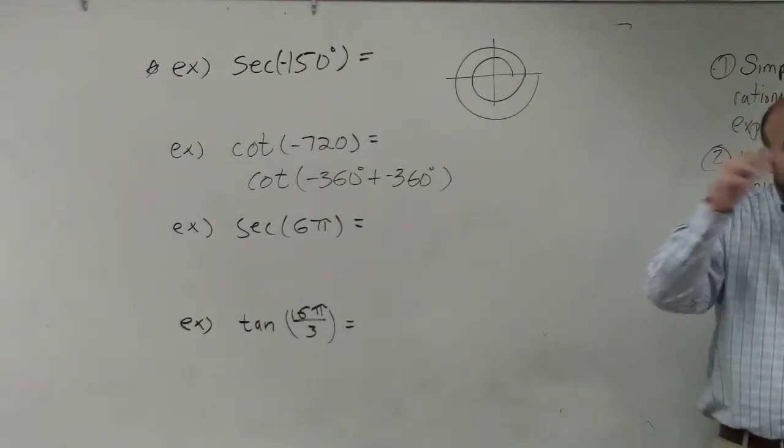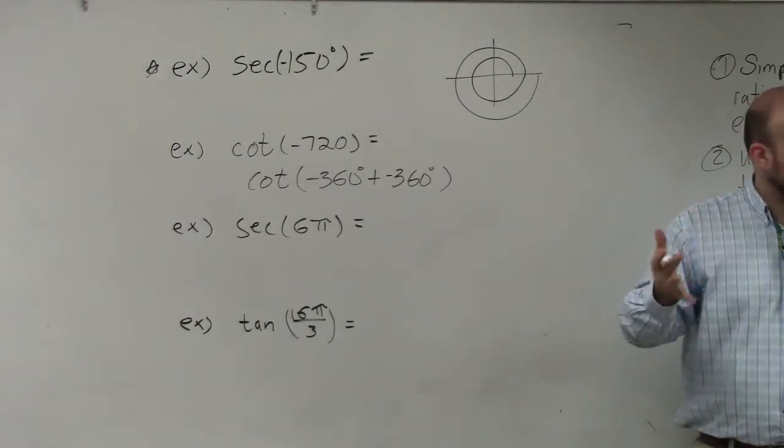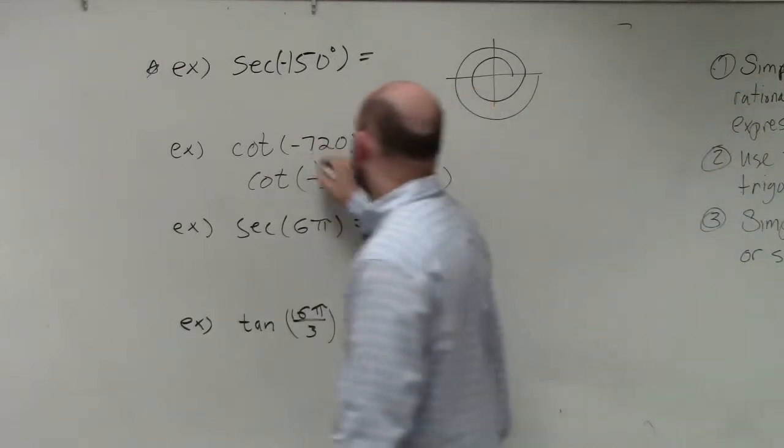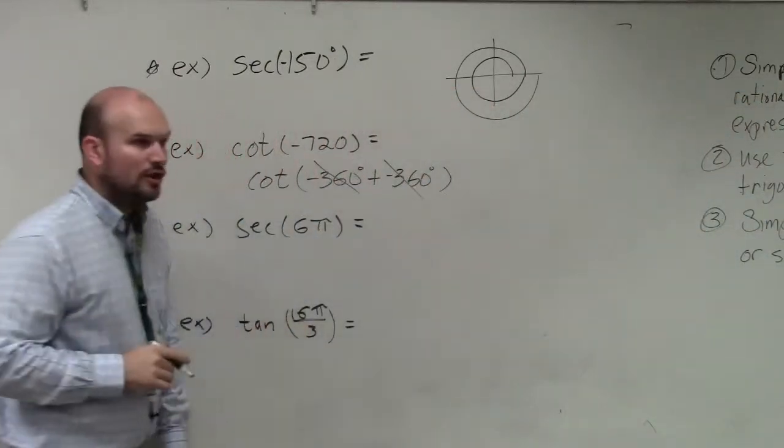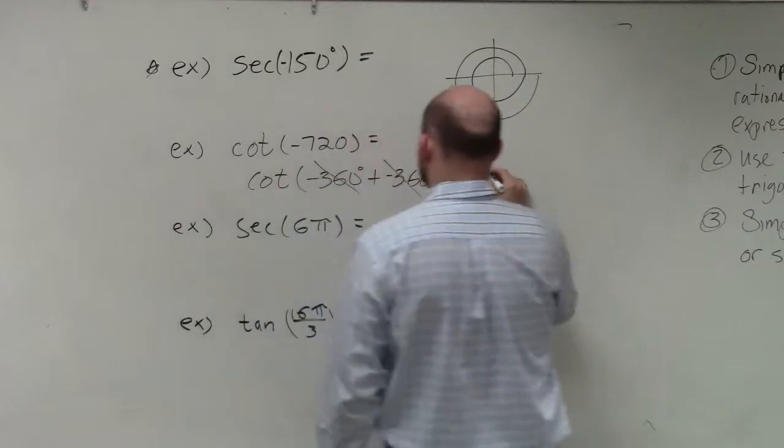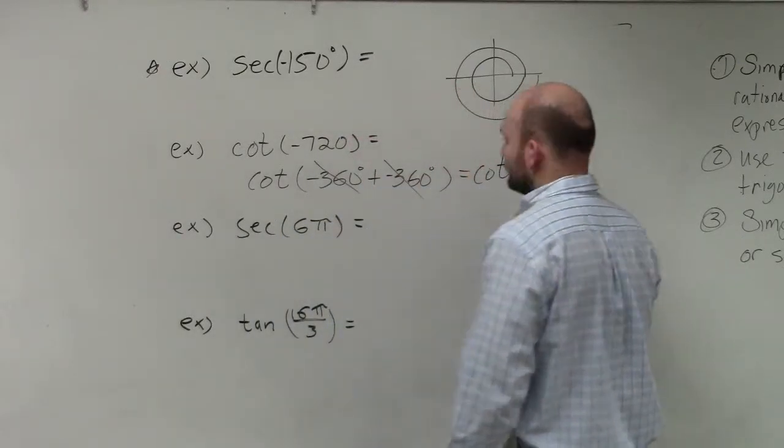Well, every single time we're going around the circle, that's not changing anything, right? That's just giving us a coterminal angle. So I cancel out all of my periods, and I see that this is the same as cotangent of 0 degrees.